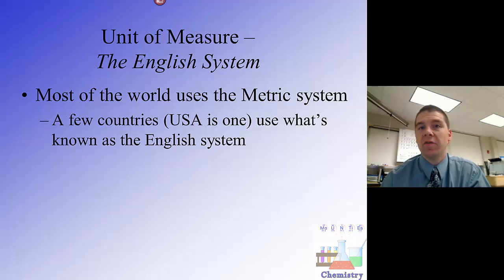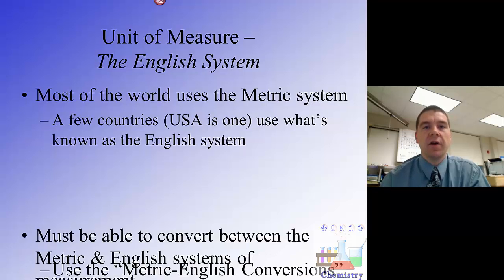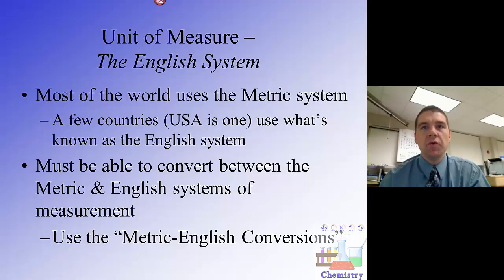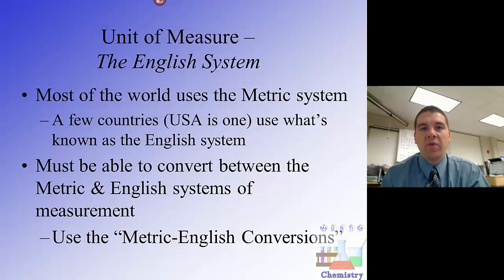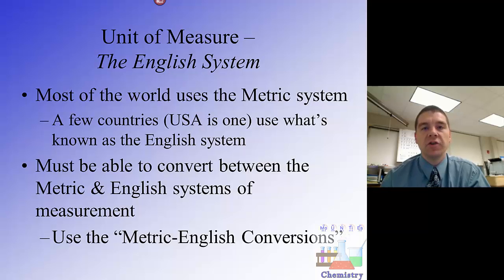The metric system has everything in base 10, while the English system has a variety of different conversion factors. To make these conversions, we need to use what we know about conversions within each system, and then we need some bridges — some crossovers that allow us to get between the two systems. We have three primary metric-English conversions, or bridges.